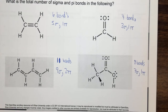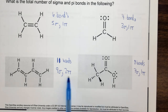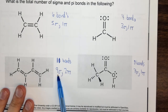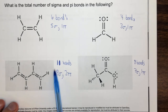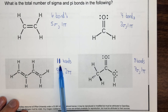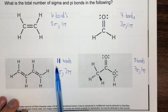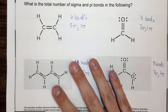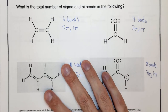This is how we count sigma and pi bonds. Make sure the total number of bonds adds up, since all bonds are either sigma or pi. And make sure you count carefully — as I demonstrated, it's easy to miscount.